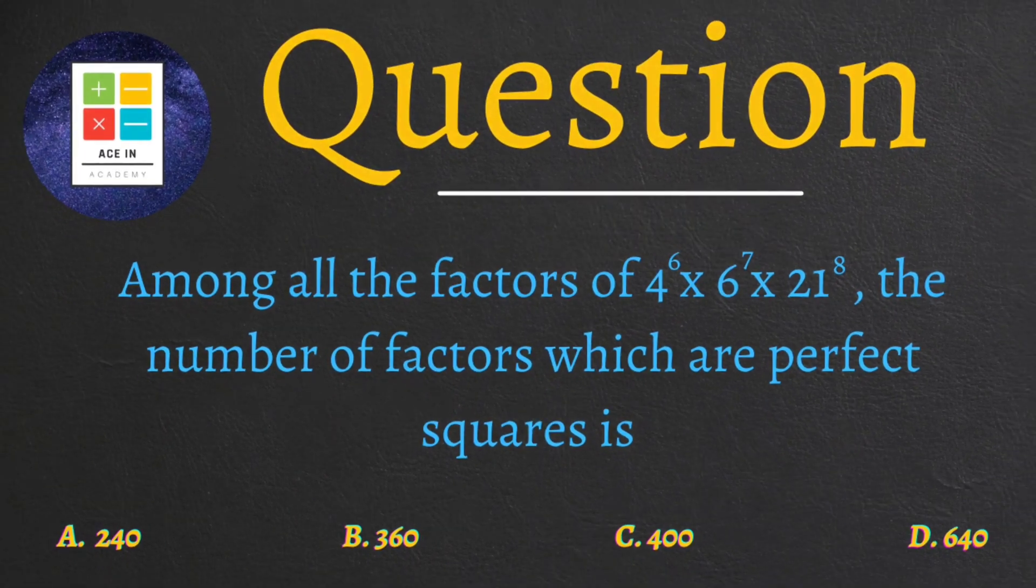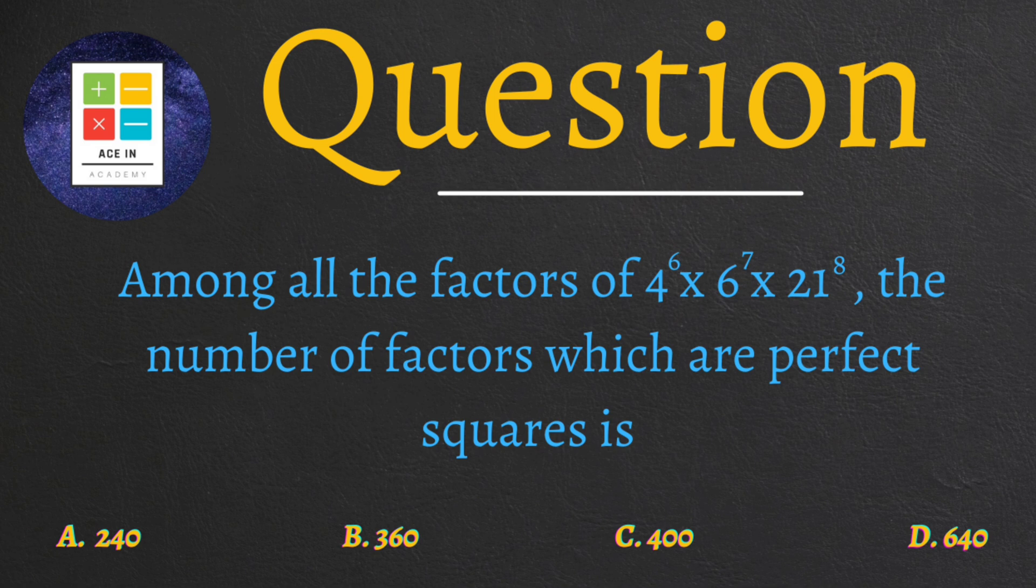Now the question is as follows: among all the factors of 4 raised power 6 into 6 raised power 7 into 21 raised power 8, the number of factors which are perfect squares is. We are provided with option A 240, B 360, C 400, and D 640.